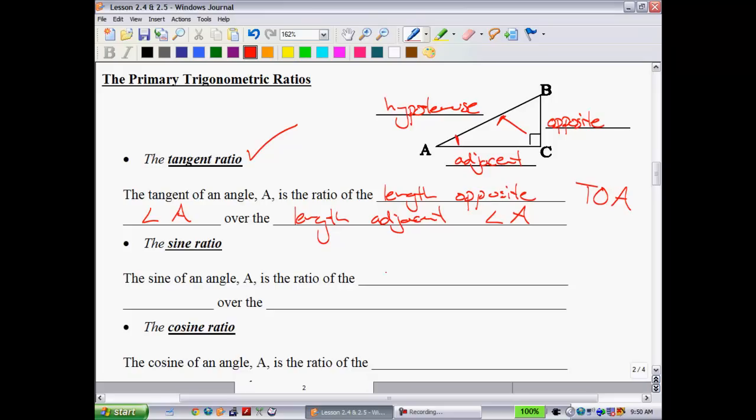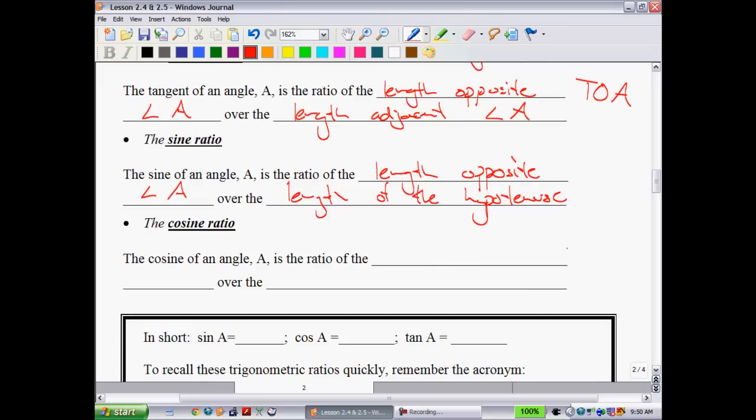The sine of angle A is the ratio of the length opposite, same as tangent, opposite angle A over the length of the hypotenuse. So that's a little bit different. We haven't had the hypotenuse in this mix. And the cosine, you might be able to guess where this one's going to go. The cosine of an angle A is the ratio of the length adjacent angle A over the length of the hypotenuse.